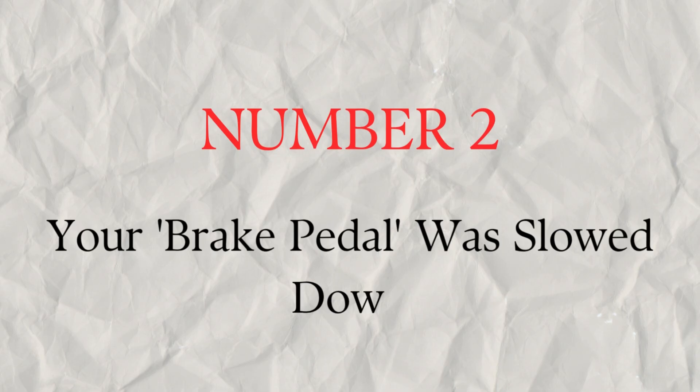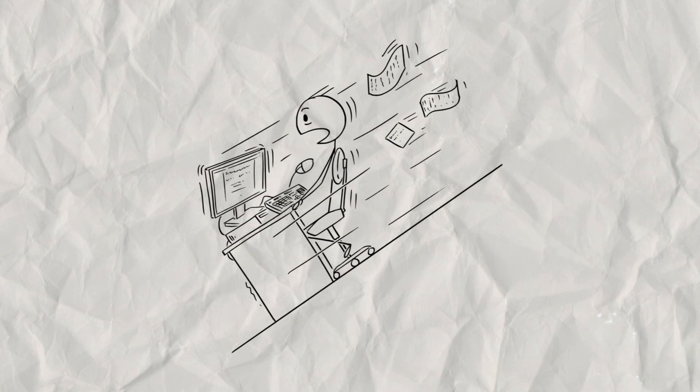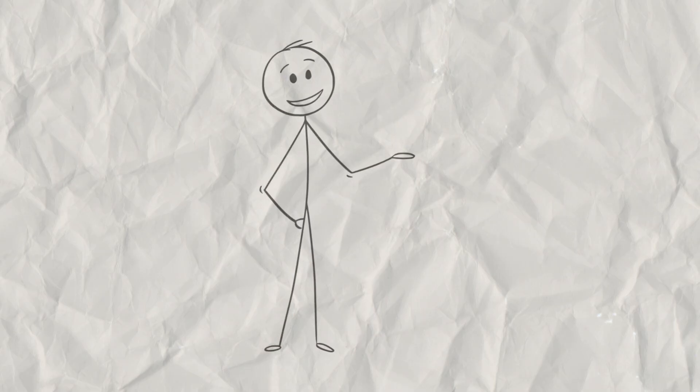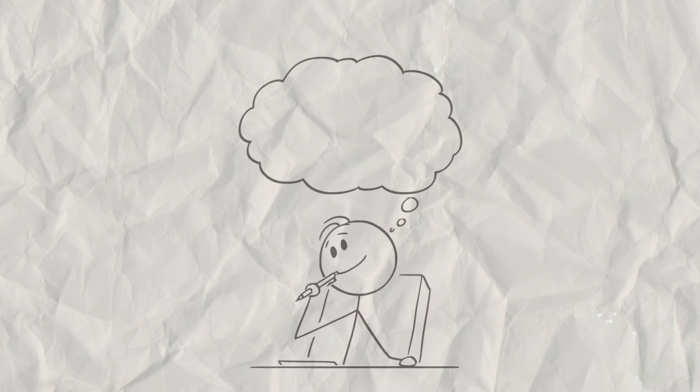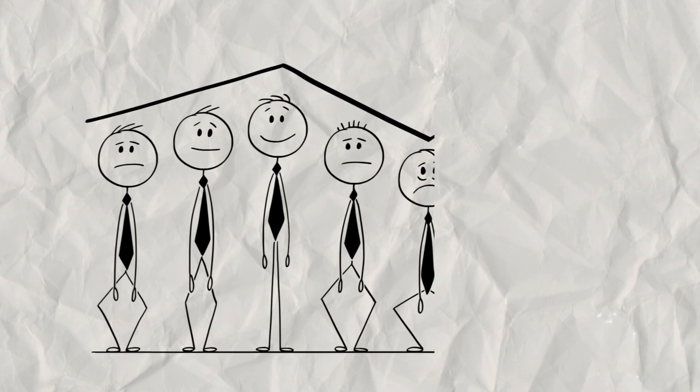Number two, your brake pedal was slowed down. If the amygdala is the gas pedal, the panic button, your brain also has a brake. This is the prefrontal cortex, or PFC. It's the part right behind your forehead. The PFC is the adult in the room. It's in charge of logical thinking, planning, impulse control, and emotional regulation.